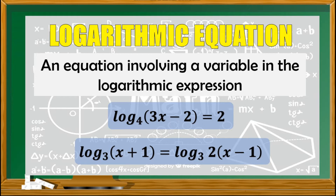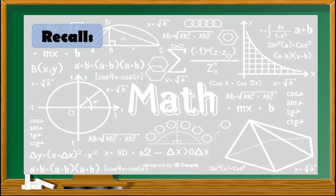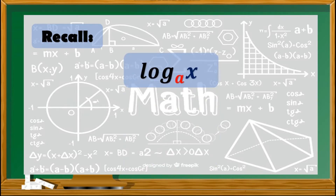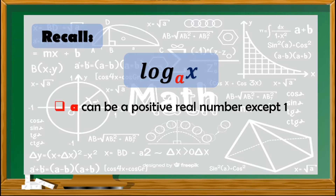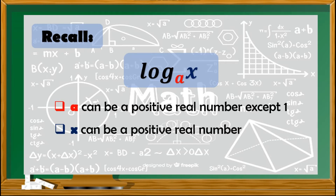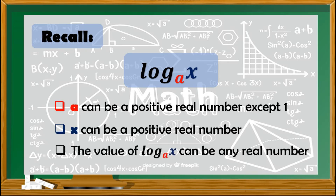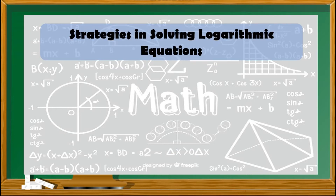When we are dealing with a logarithmic equation, we are solving for the value of the variable. In solving logarithmic equations, it is important to recall the restrictions on the values of a and x in the logarithmic expression, logarithm of x with base a. Take note that a can be a positive real number except 1, meaning a is greater than 0 but not equal to 1. x can be a positive real number. And the value of the logarithm of x with base a can be any real number — meaning it can be 0, negative, or positive.